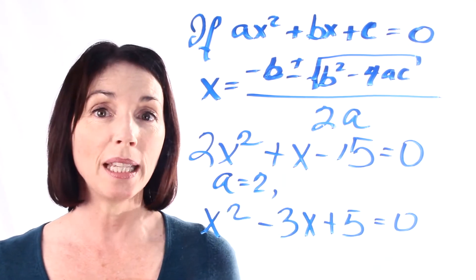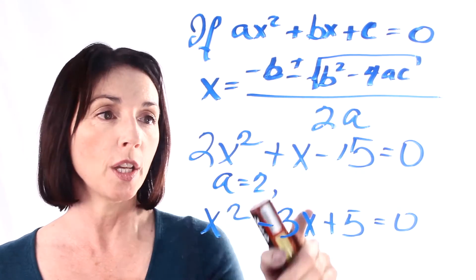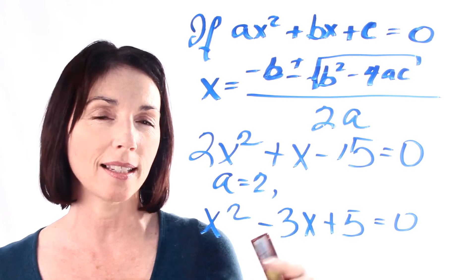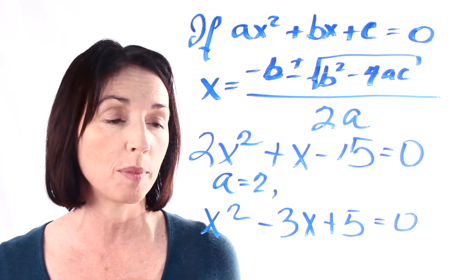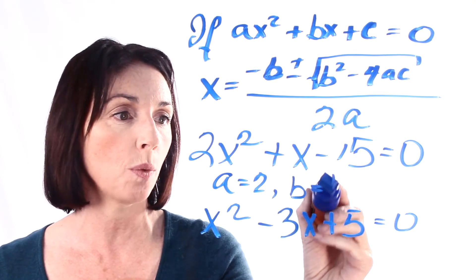Now what about b? b is the coefficient of our x term. So here we just have a single x. Now there's no number written in front of it, but x is the same as 1 times x. So that means in this case, b is equal to 1.